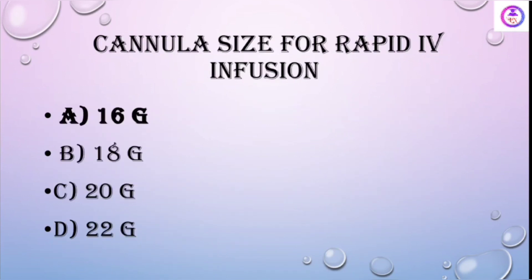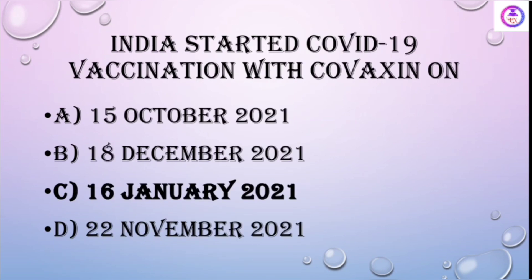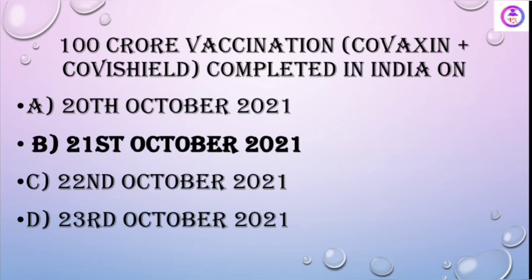Cannula size for rapid IV infusion is 16 gauge. Which color is not included in the triage system? Blue color. India started COVID-19 vaccination with Covaxin on 16 January 2021. The 100 crore vaccination milestone (Covaxin plus Covishield combined) was completed in India on 21 October 2021.